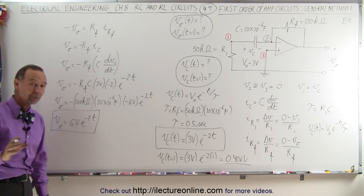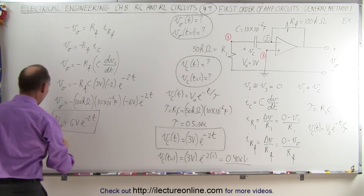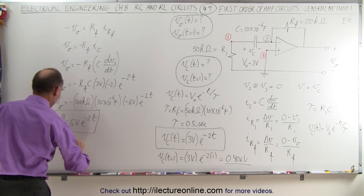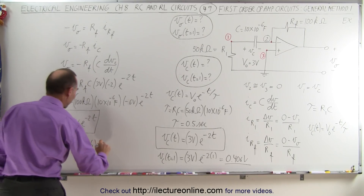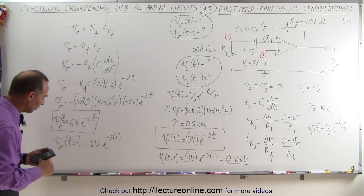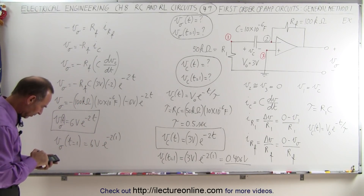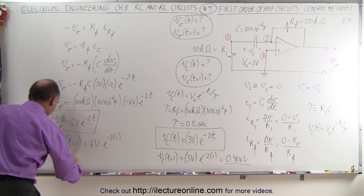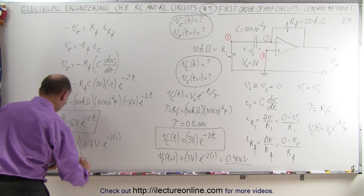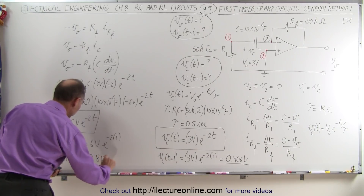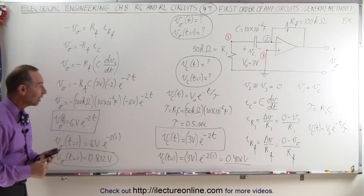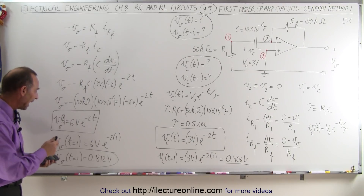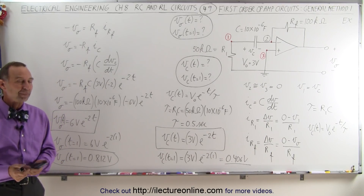Now that we have the equation for the output voltage, to solve for t equals 1 we substitute: output voltage equals 6 volts times e to the minus 2 times 1. Evaluating that gives an output voltage when time equals 1 of 0.812 volts. That's a nice example of how to find the voltage across the capacitor, the output voltage of the circuit, and the voltage at a particular time.